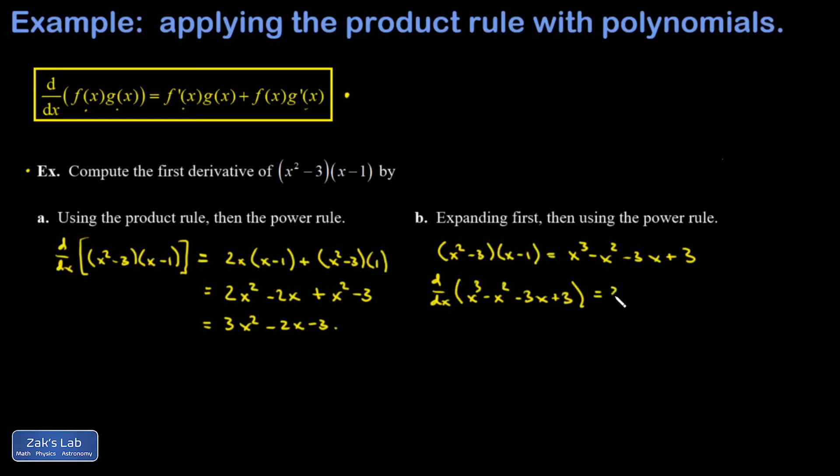x cubed differentiates to 3x squared using the power rule. Negative x squared differentiates to negative 2x. And negative 3x differentiates to negative 3. And then the derivative of the 3 is just 0. So that doesn't contribute anything. So then we compare our two answers and we see that they're the same.